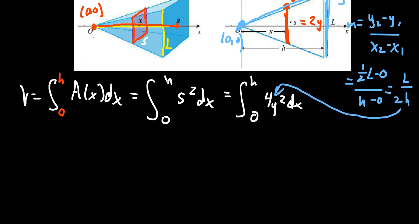So plugging that in, the two on the bottom was going to square to become a four. It'll cancel with the four that's in the numerator. And so we end up with the integral from zero to h. We're going to get an L squared over h squared. When you plug in the function y equals L over 2h times x, you plug that in, so you get an L squared on top. You'll get a 4h squared on bottom and x squared as well. So here we have the following.